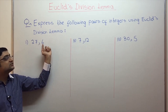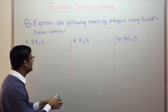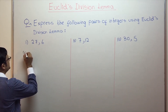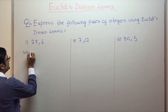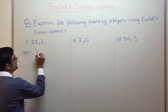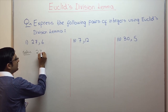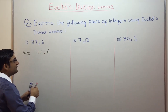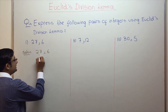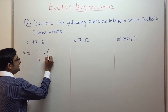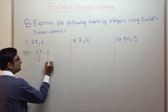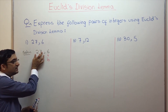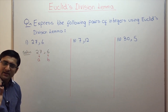The first pair is 27 and 6. We'll begin with the solution. The first step is to copy your integers in the same order: 27, 6. Label the first integer as A and the second integer as B. Basically your first integer is your dividend and the second integer is your divisor.